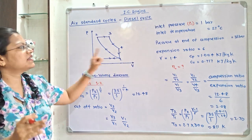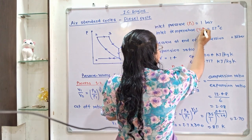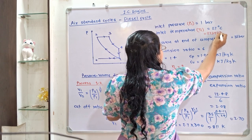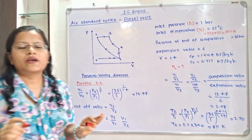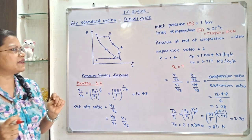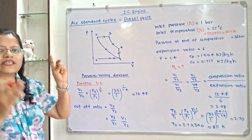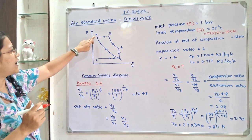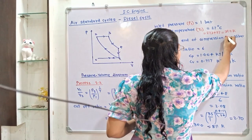Inlet temperature is 27 degree Celsius, so T1 is equal to 27 degree Celsius. We have to convert it into Kelvin: 273 plus 27 is equal to 300 Kelvin, because for the calculation we require this temperature in Kelvin. Process 1 to 2 is the compression process; point 1 is the start and point 2 is the end, so P2 is equal to 35 bar.